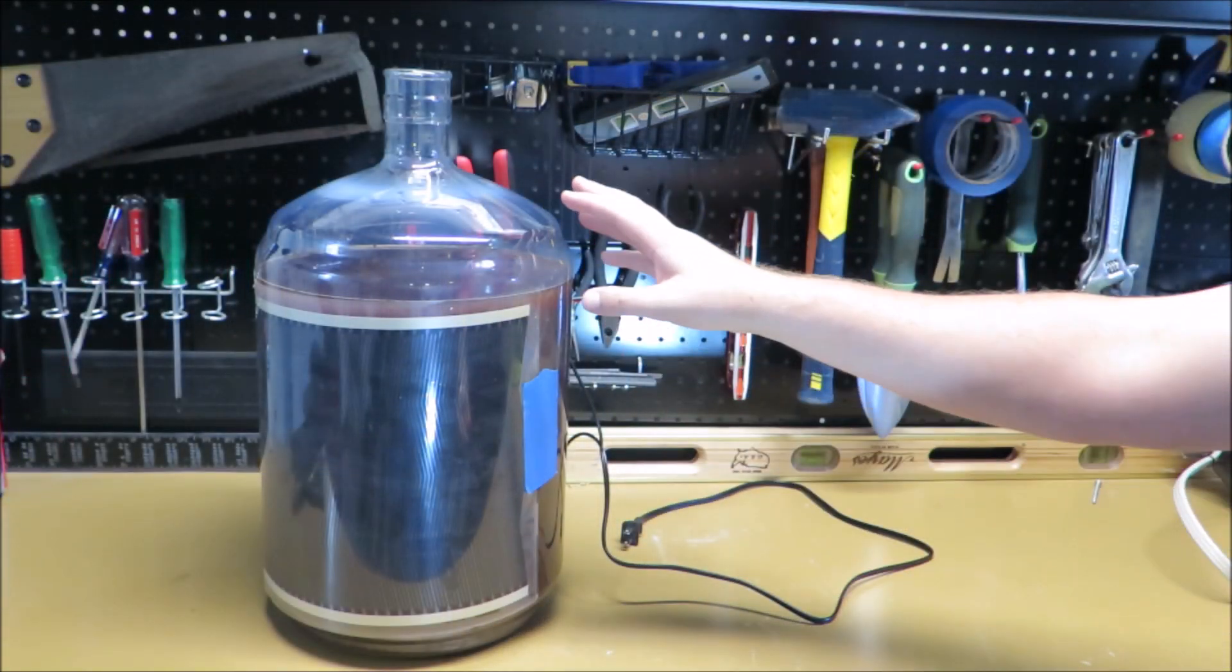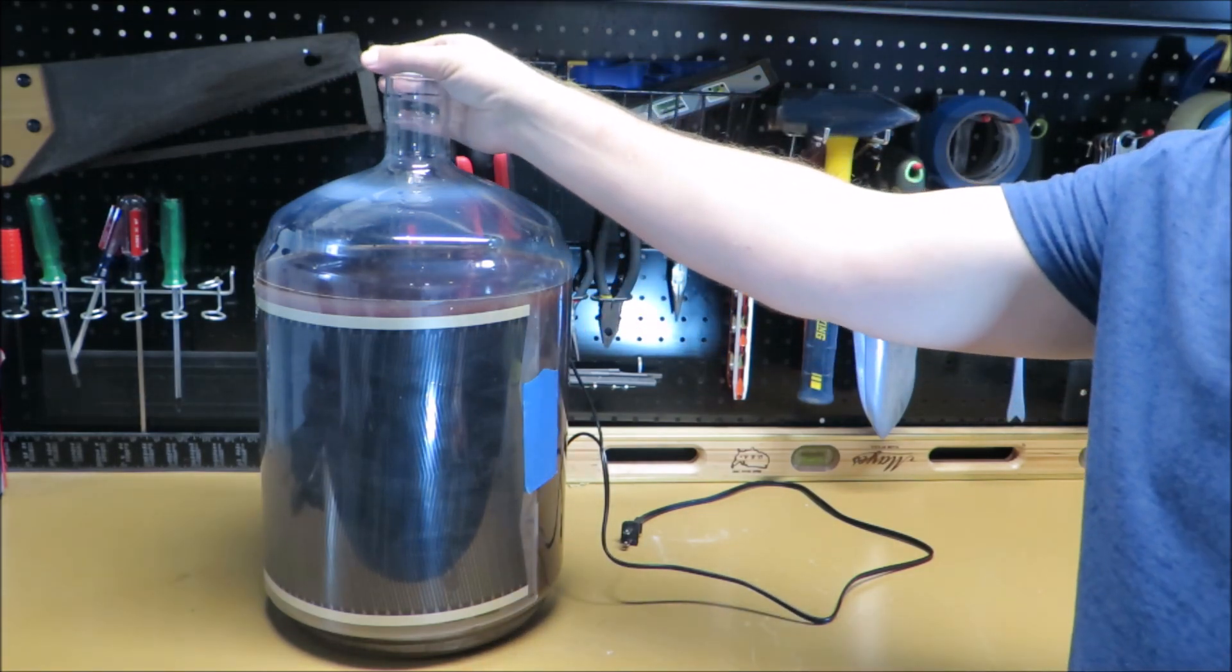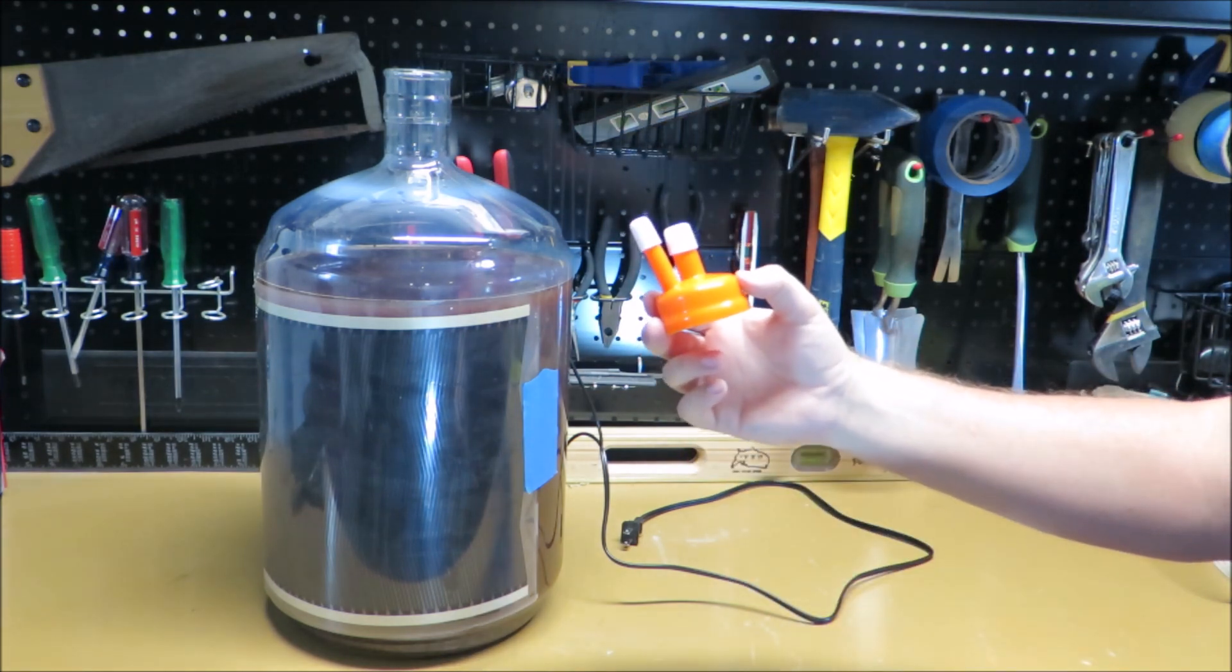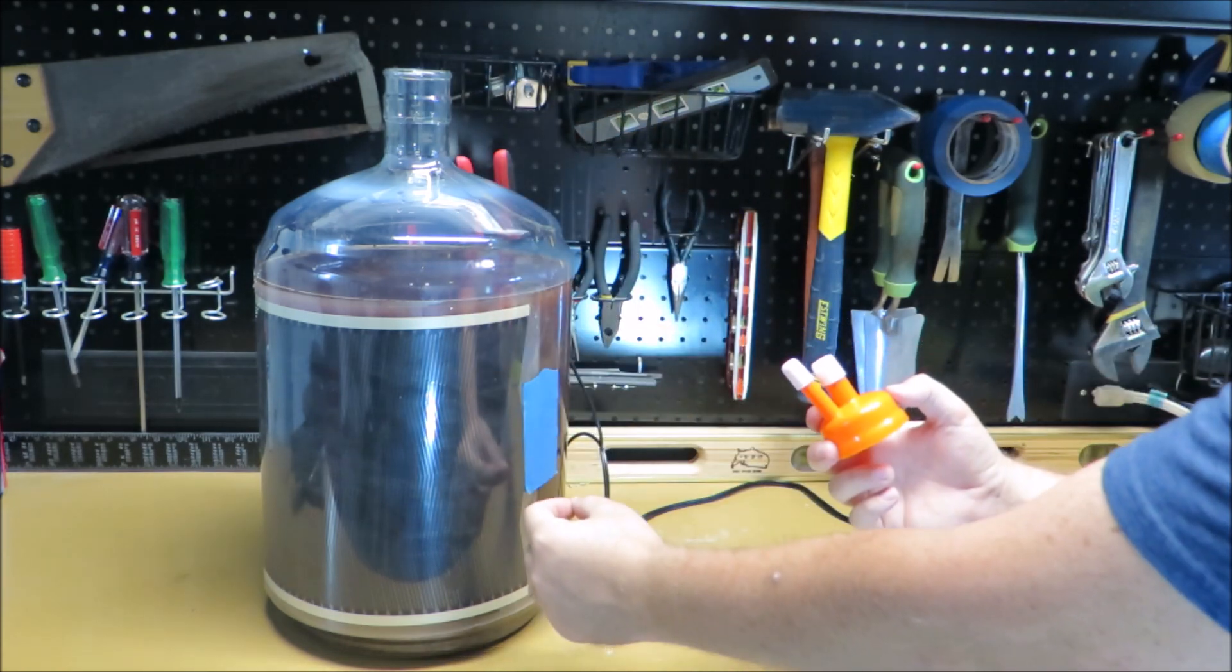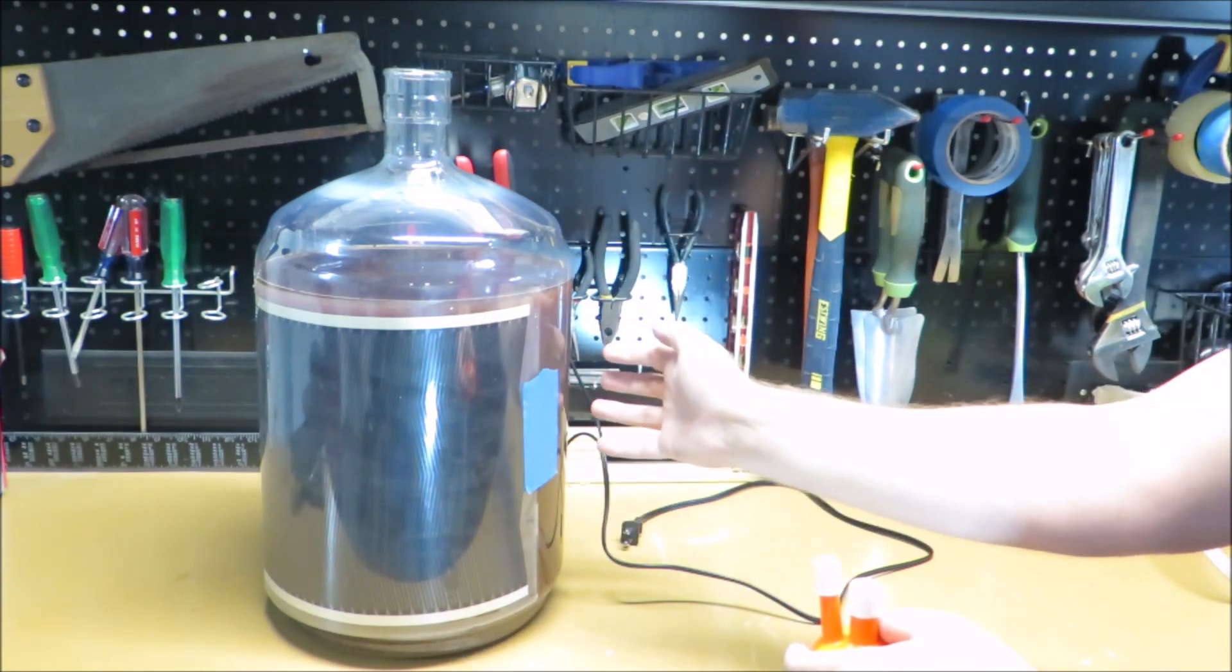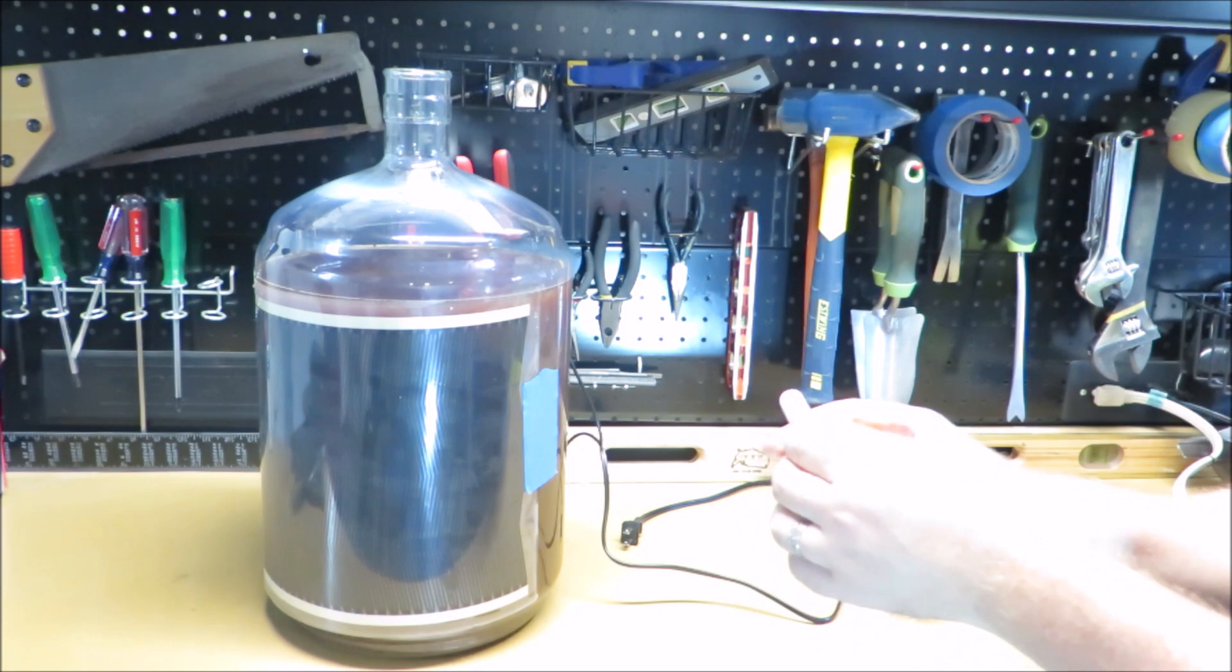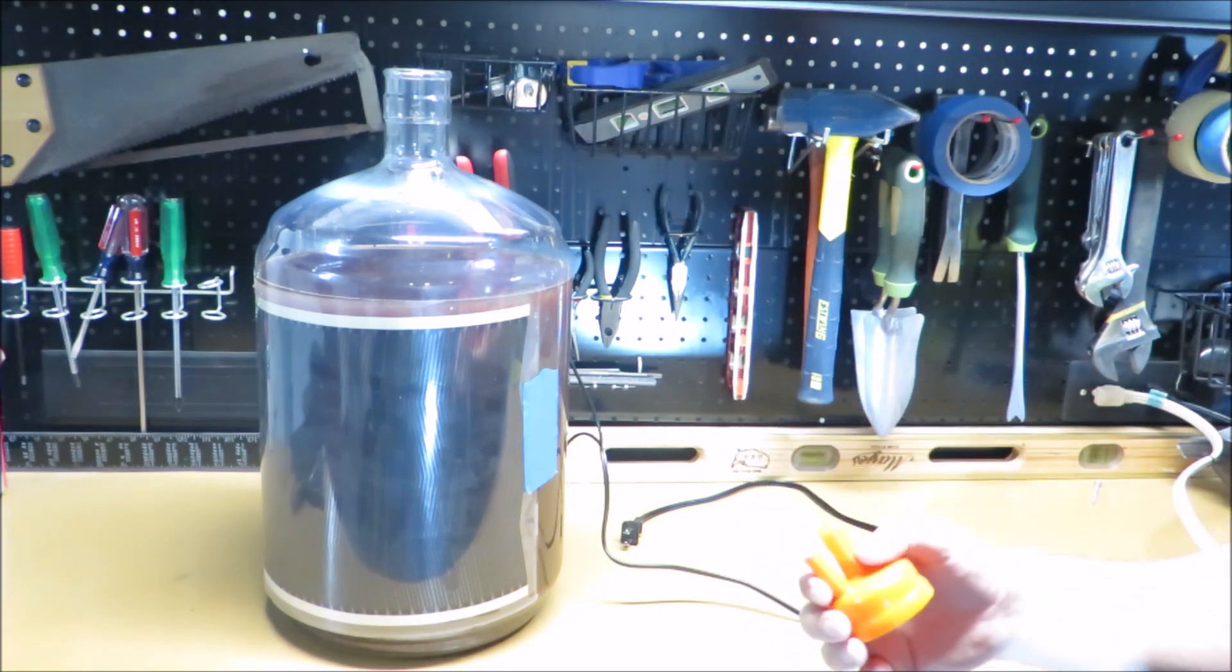So I just went ahead and transferred my beer into my secondary fermenter. Before I just had your standard white top with just one hole in it, but now I need to go ahead and have two holes. One would be for the metal probe that's going to go right into the liquid, and then of course you'd have this one for the valve. So let's go ahead and show you how it's done.